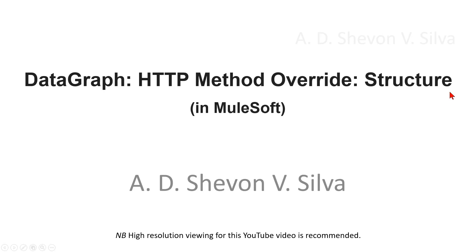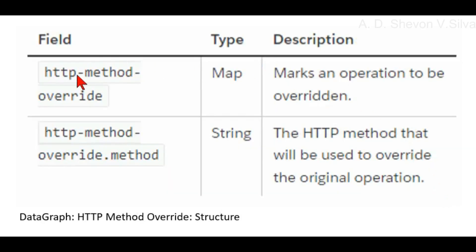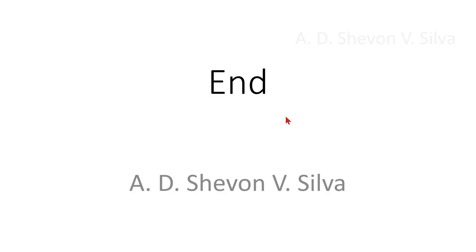Here you can see the structure of HTTP method override in data graph. You can see the field http-method-override — type map — marks an operation to be overridden. Here the field http-method-override.method, type string, is the HTTP method that will be used to override the original operation.